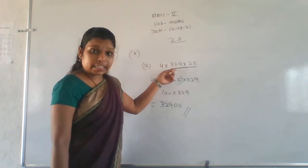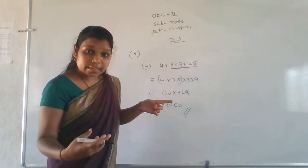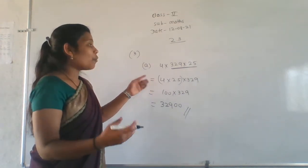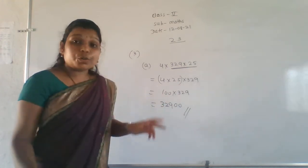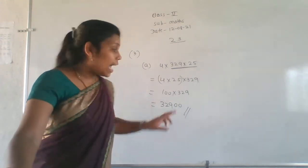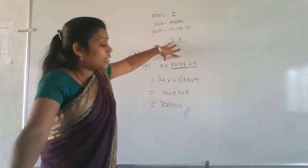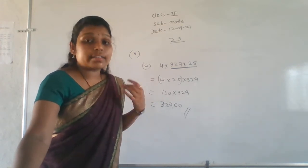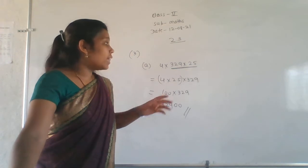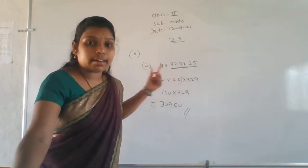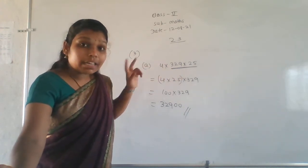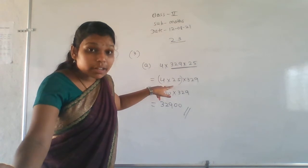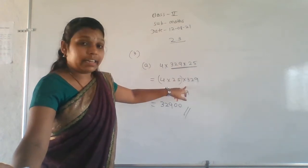If we do 4 into 329 directly, it gives a complicated number, and then multiplying again by 25 will be a lengthy process. So for that reason we have to make a group. To get 10, 100, or 1000, we make a group from the three given numbers — multiply any two numbers to get 10, 100, or 1000, then multiply with the third number. Here, 4 into 25 gives 100.